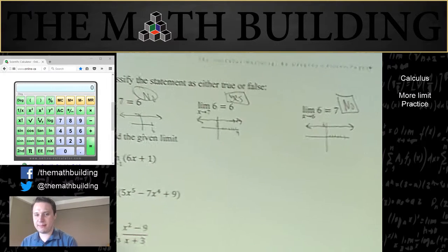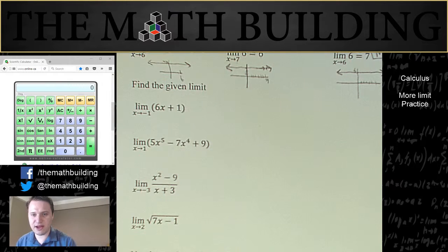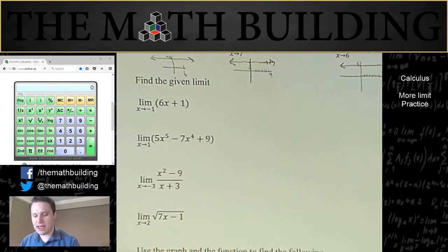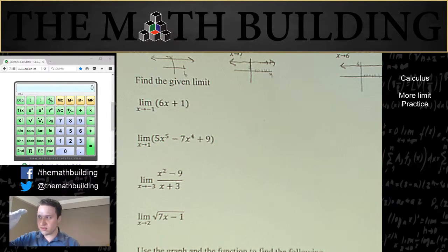So I hope that makes sense to you. Let's do a few more limit problems. Find the following limits. Now, as you know, the correct way to do this is to make a table around whatever value you're doing, and then get close to it on one side and close to it on the other side, and see if they both approach the same number. That's the right way to do it.